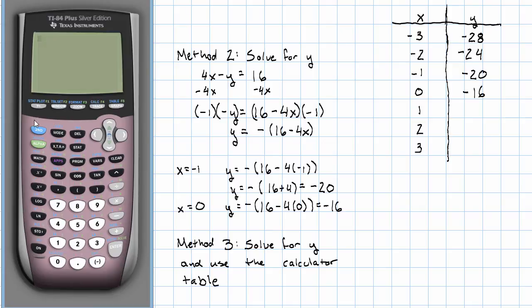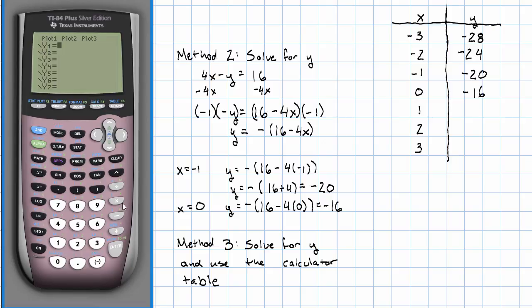I take my equation that I've solved for y. Negative parenthesis 16 minus 4x. Remember to the calculator, every independent variable is called x. And now we understand this as an equation in two variables, y and x.